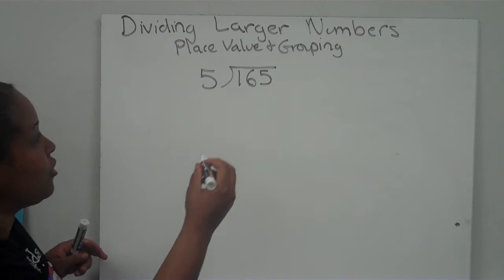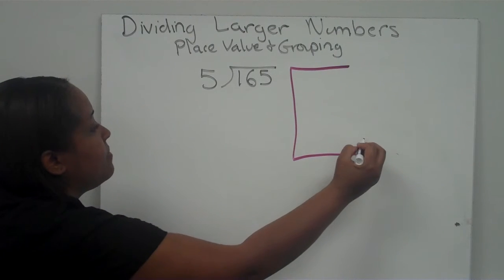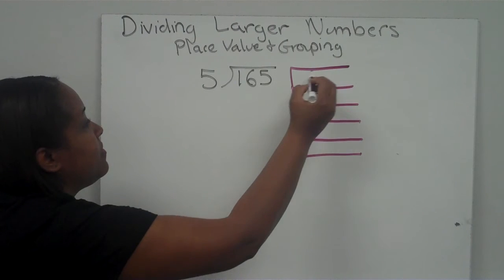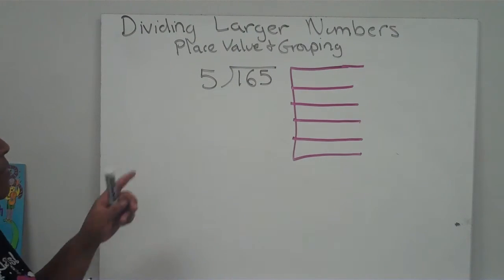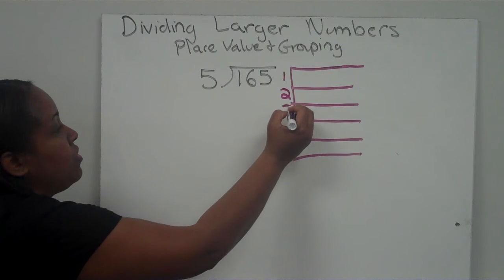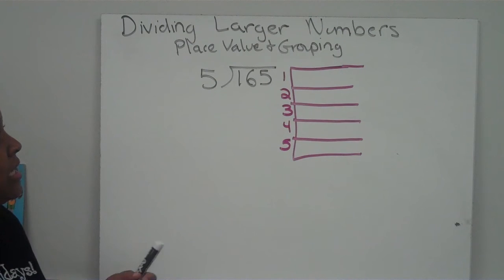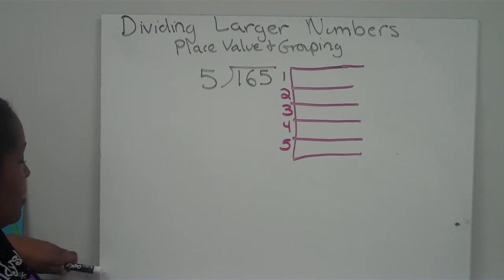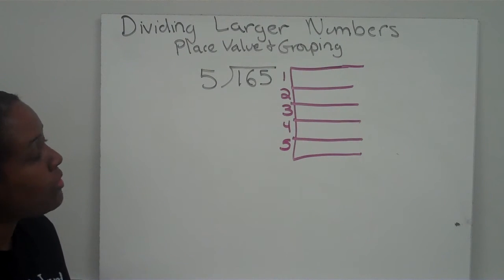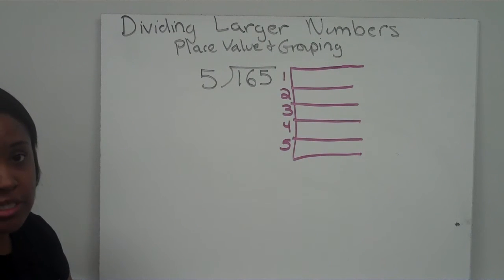First of all, I'm going to make my five groups — one, two, three, four, five — because five is my divisor. My goal here is to evenly divide 165 among my five groups. Now, I could pass out one at a time to each group until we get to 165, but that would take forever.